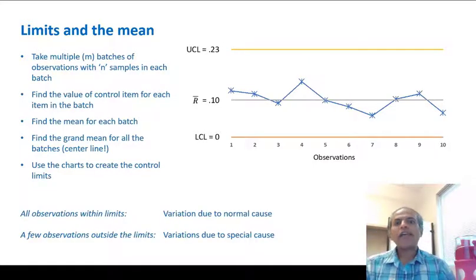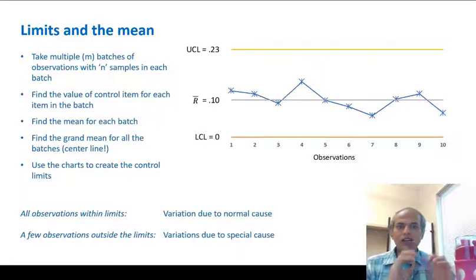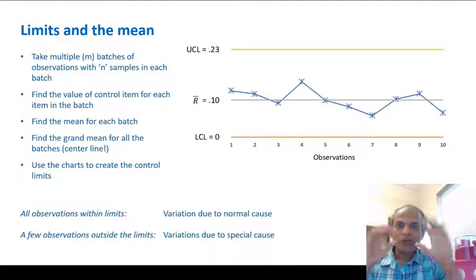So long as the observations are within control limits, we say that the process is in control, or all we are saying is that the variation is being caused by normal cause. There's nothing abnormal or nothing special. But the moment a point value lies outside the control limits, what we claim is that there's a special cause which needs our attention. And then we need to look into the process, find the special cause and correct it.